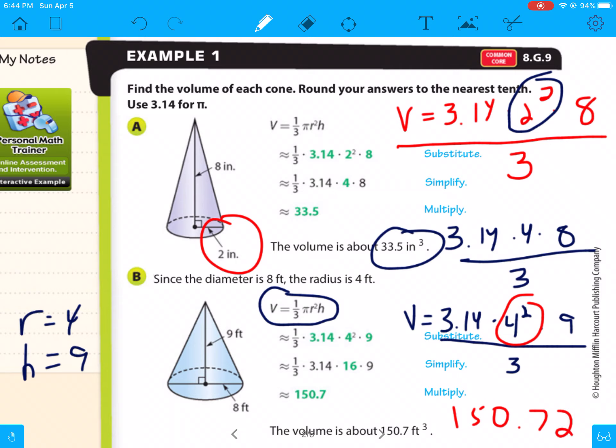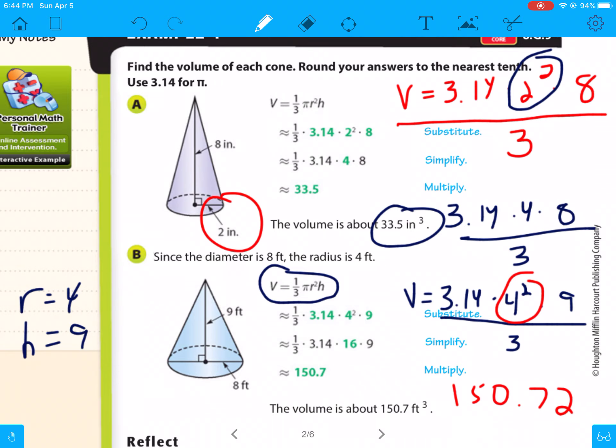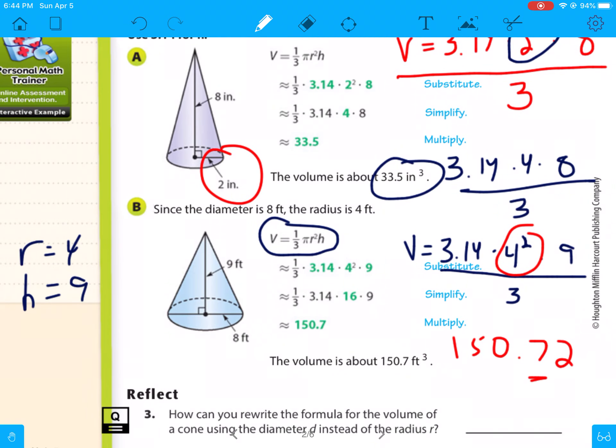So that is 452.16 divided by 3 is 150.72. And they said to round it to the nearest tenth, which is this place here. So that 2 is less than 5, so it rounds down to 150.7. And that would be cubic feet.